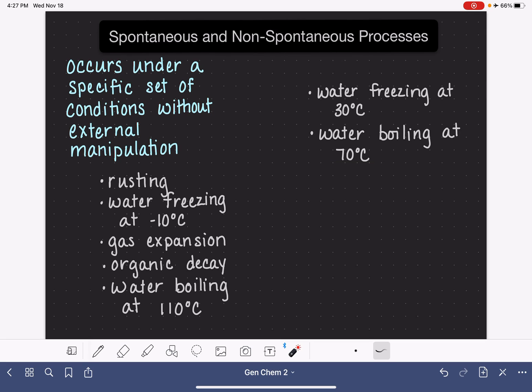we're going to have to do some sort of external manipulation to get it to boil. So again, these both are examples of a non-spontaneous process, one that would not occur without us doing some sort of external manipulation.